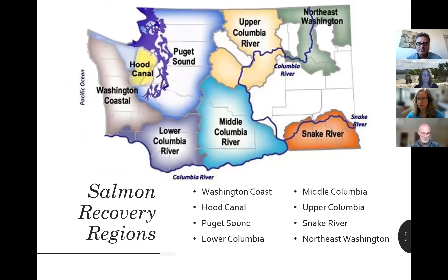Our state is divided into eight salmon recovery regions, responsible for developing their salmon recovery plans. These plans are made up of the four Hs: harvest, hatcheries, hydropower, and habitat — and we're all focused on habitat, the fourth H. These plans identify priority species, priority streams, priority stream reaches, and priority habitat actions within those areas to pursue. That's how we work with the regions to implement these recovery plans.